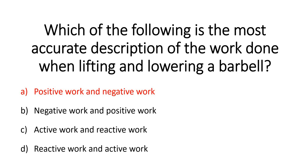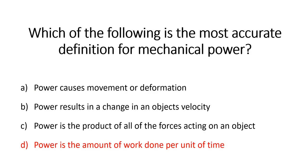The next question asked for the most accurate definition for mechanical power. The answer was D — power is the amount of work done per unit of time. Option A, power causes movement or deformation — that's how we describe a force. Option B, power results in a change in an object's velocity — velocity is a component of the power equation, not a definition of it. Option C, power is the product of all forces acting on an object — no, that would be the net force. So the answer is D.